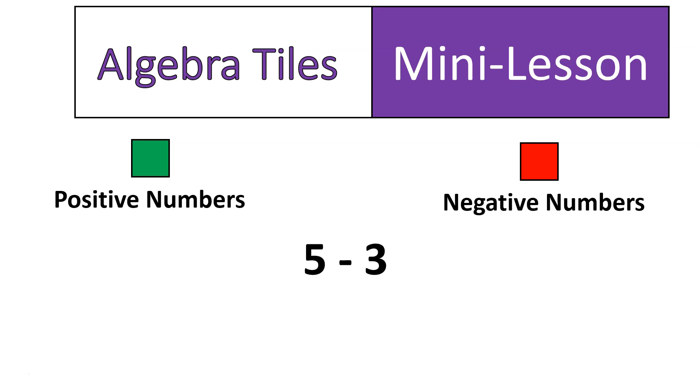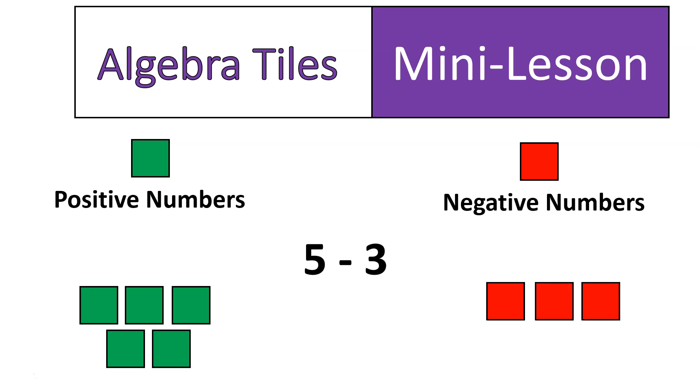But this is the way it would look like using algebra tiles. I would look at those two integers, five, and then the three has a negative in front of it. So instead of doing minus three, I'm going to think of that as negative three. So I'll have five positives and three negatives.